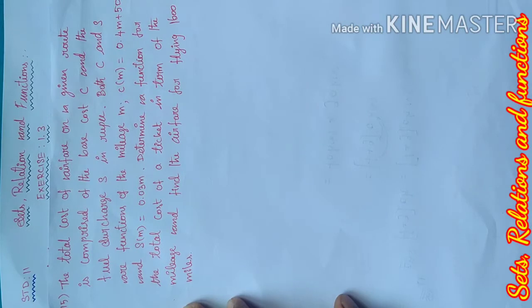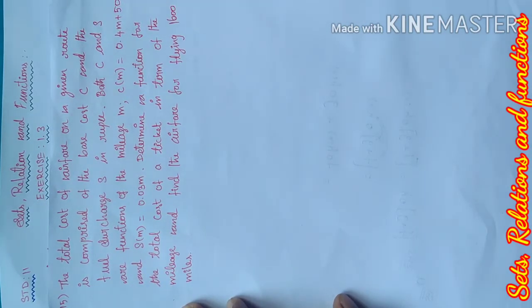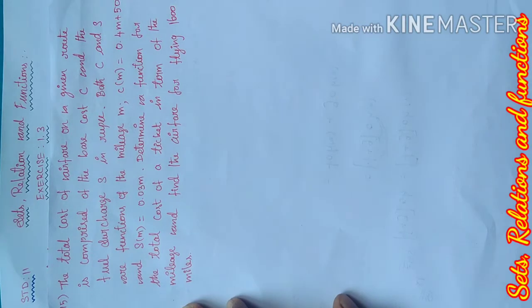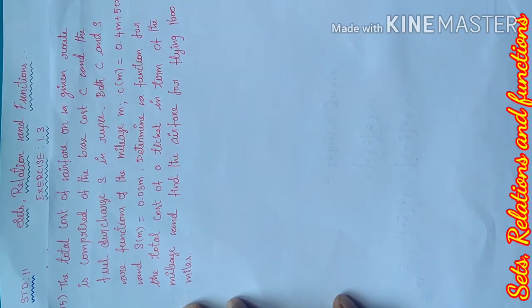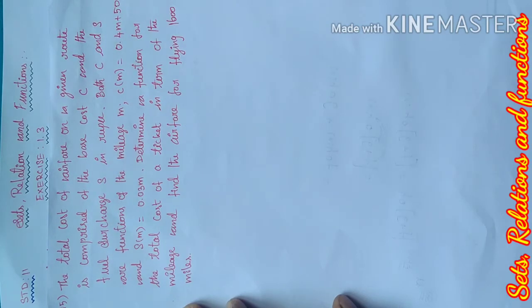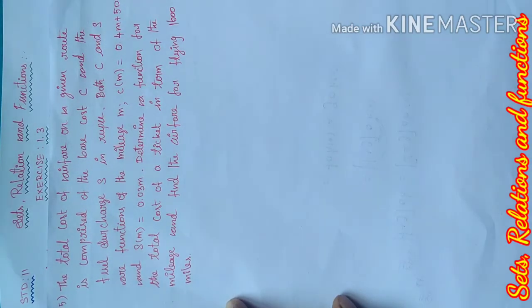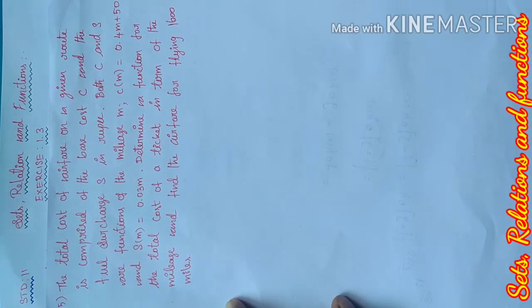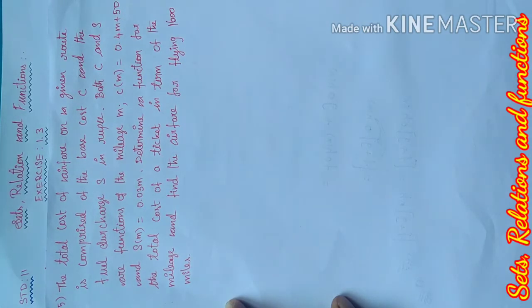The total cost of airfare for a given route is comprised of a base cost C and the fuel surcharge S in rupees. Both C and S are functions of the mileage M. C of M equals 0.4M plus 50, and S of M equals 0.03M.